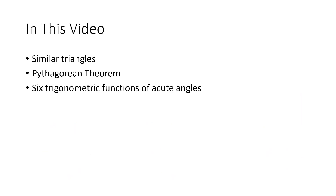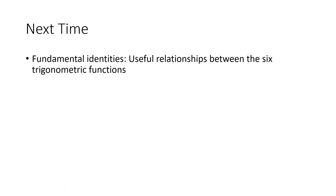So what did we do in this video? We talked about similar triangles — when two triangles are similar, the ratios between the sides are equal, and that allows us to define trigonometric functions just in terms of the angle itself. It doesn't matter how big or small the triangle is; as long as we know the acute angle, we can figure out the ratios. We talked about the Pythagorean theorem, and we talked about the six trigonometric functions of acute angles — SOHCAHTOA is the handy device for the three most important ones. Next time we'll be talking about fundamental identities, which are useful relationships between the six trig functions. I'll see you then!